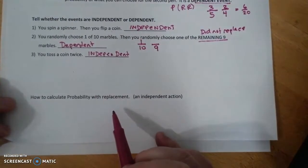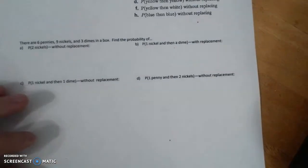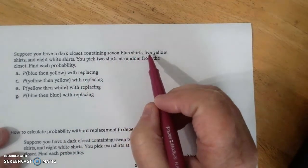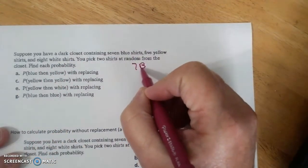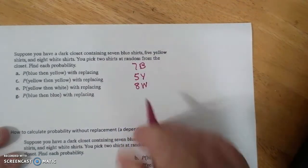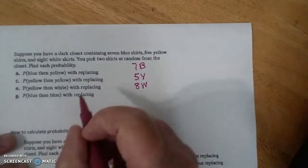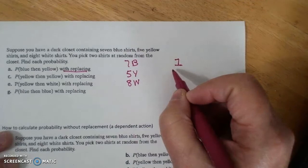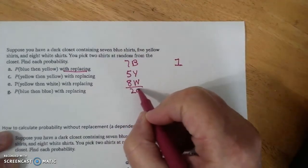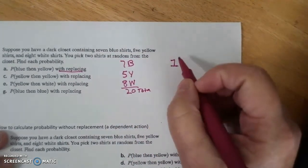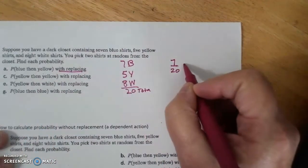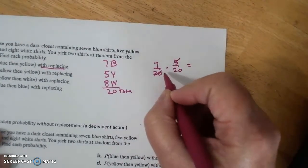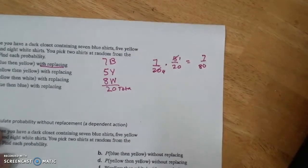So we're going to calculate probability with replacement, which is an independent action. Suppose you have a dark closet with 7 blue shirts, 5 yellow shirts, 8 white shirts. You pick two shirts at random from the closet. Find the probability with replacing. Blue is 7 over 20, we have 20 total. So blue is 7 over 20, and then yellow is 5 over 20, and then I'm going to multiply. Simplify before you multiply. 7 over 80.